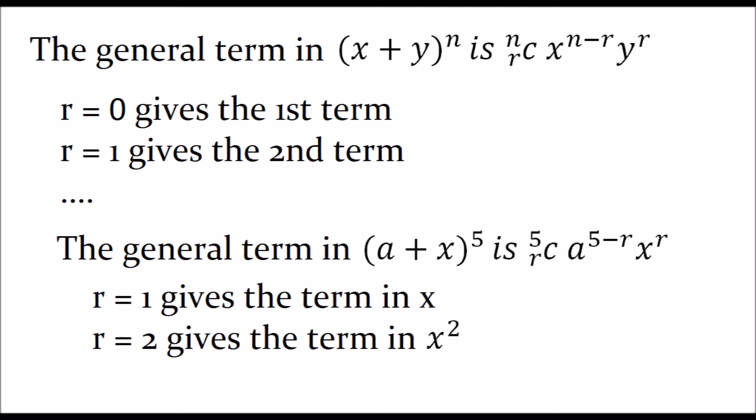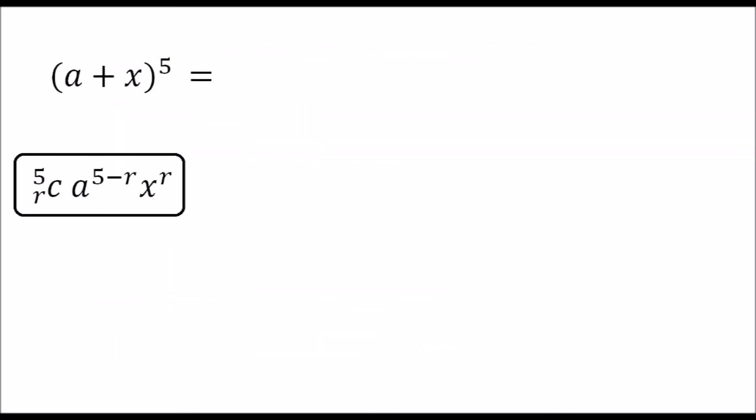We need the terms in x and x squared as previously stated. So r equals one gives the term in x and r equals two gives the term in x squared. All we need to do is put r equals one and put r equals two in the general term shown in the box and add them up.